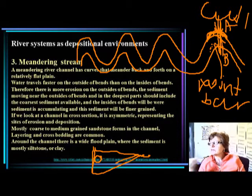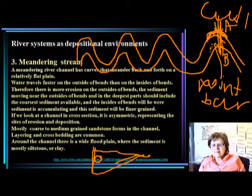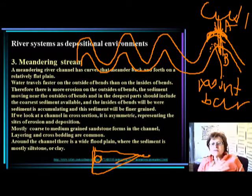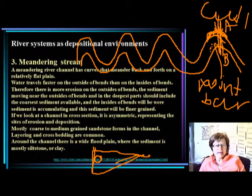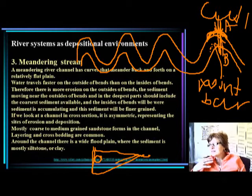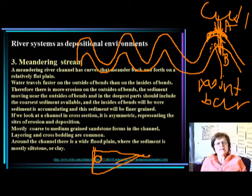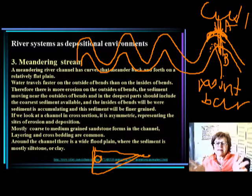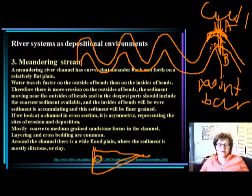Because the meandering part of the streams is usually closer to the beach, this sand will mostly contain quartz. Around the channel you have wide floodplains, and the floodplain sediment is mostly siltstone and clay — so siltstone and mudstone on the floodplains, and coarse to medium-grade sand in the channel.